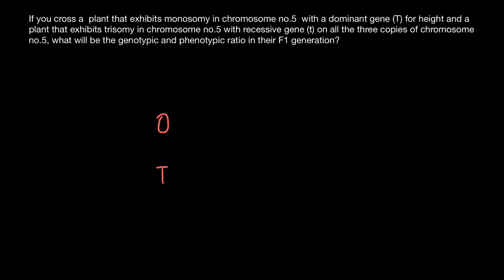As for the second parent, which has three copies of chromosome number five, we cannot divide three by two — in genetics we can only get two types of gametes. One would have one chromosome with recessive gene t on it, and another type of gamete would have two such chromosomes with recessive gene t on each.